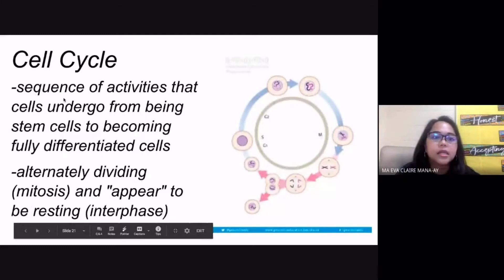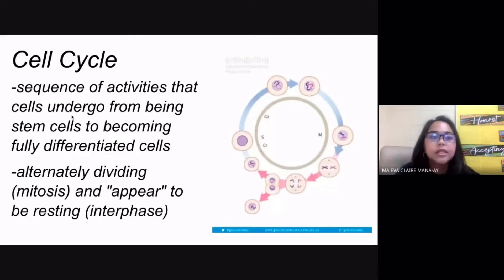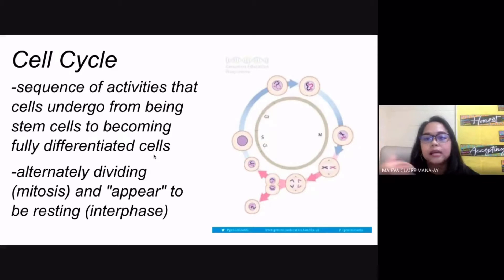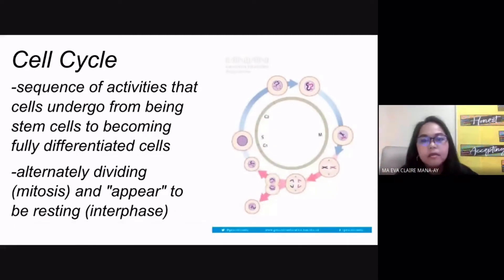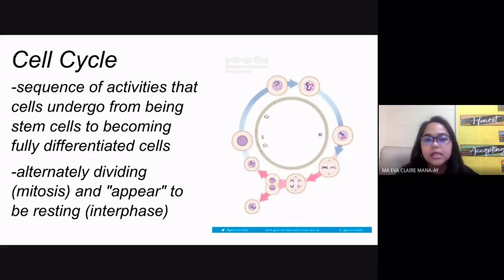When you say cell cycle, this is a sequence of activities that cells undergo from being stem cells to becoming fully differentiated cells. These are the alternately dividing cells — those undergoing mitosis, and those that appear to be resting at the interface part of the cell cycle. Your cells are resting, then dividing, and the products are your specialized, differentiated cells.